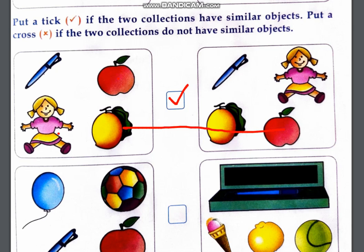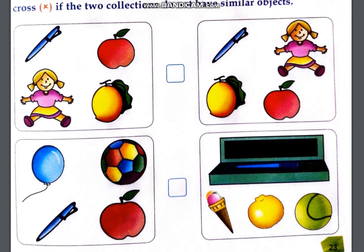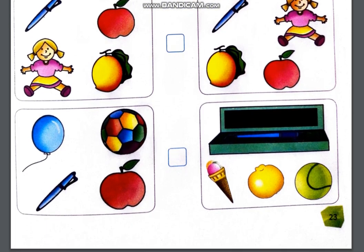Now next, when you will see, all the things are same? Here, there is a balloon in the first collection, and in the second collection there is no balloon, so this is different. This is a pen, ball, and apple, so there are different collections. So what will we do in this collection? We will cross here because there are no similar objects.